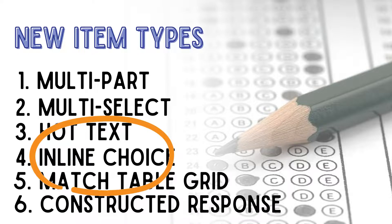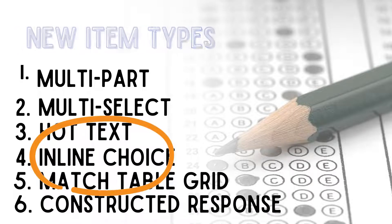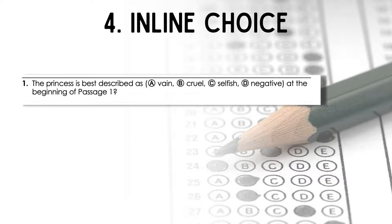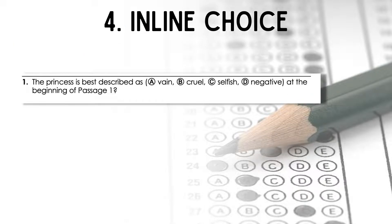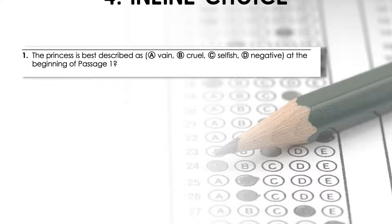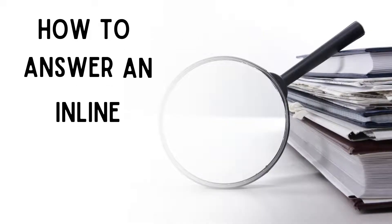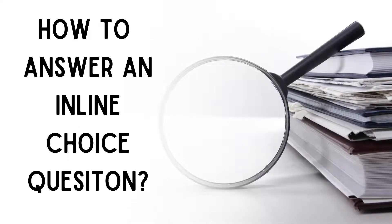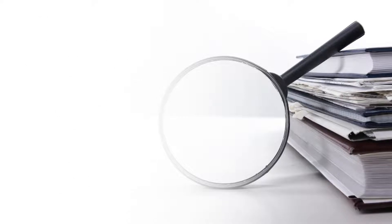There are six new item types. In this video, I will focus on inline choice questions. Inline choice questions are questions where students will select a word or phrase within a sentence or from a drop-down box to complete the question. To better help you and your students learn how to answer an inline choice question, let's work through one from start to finish.